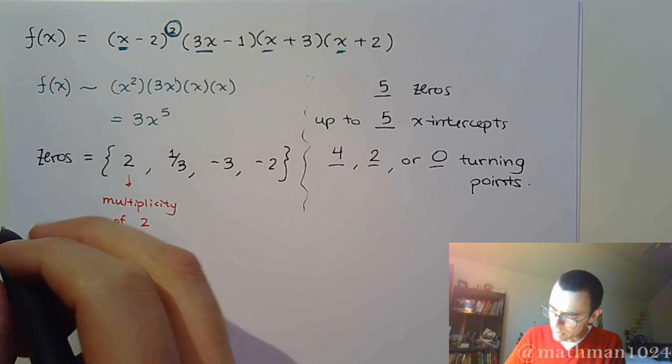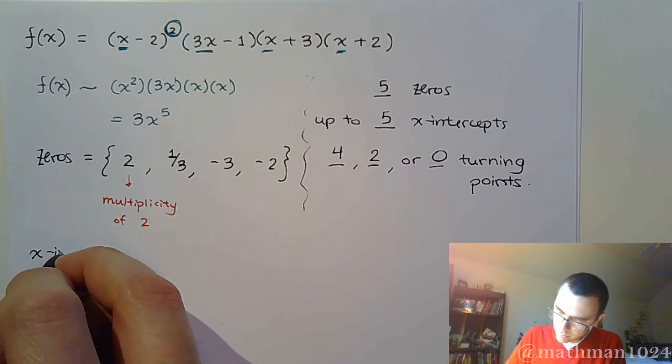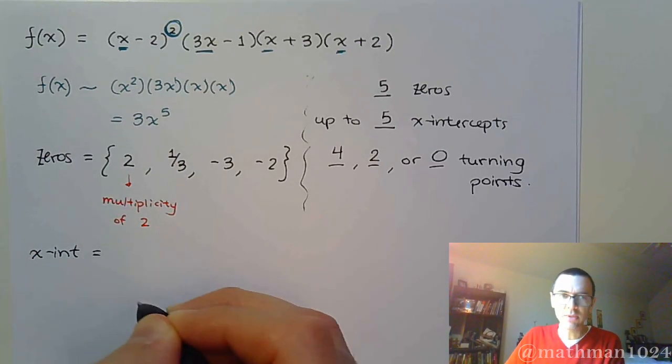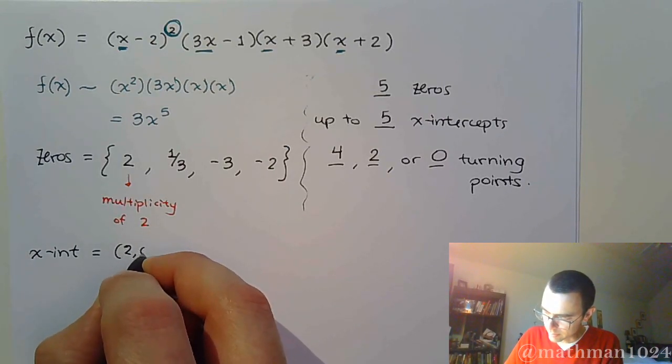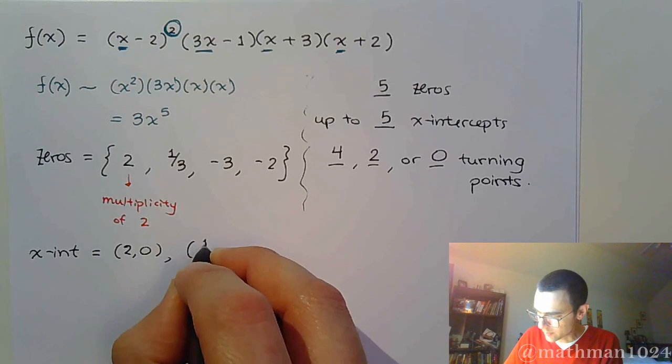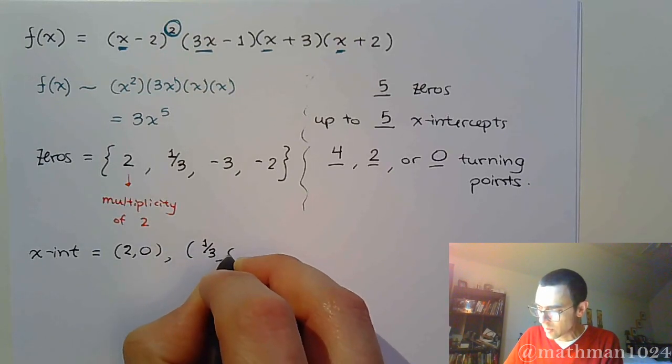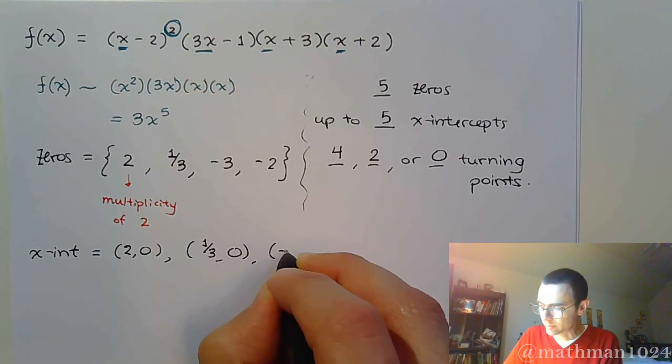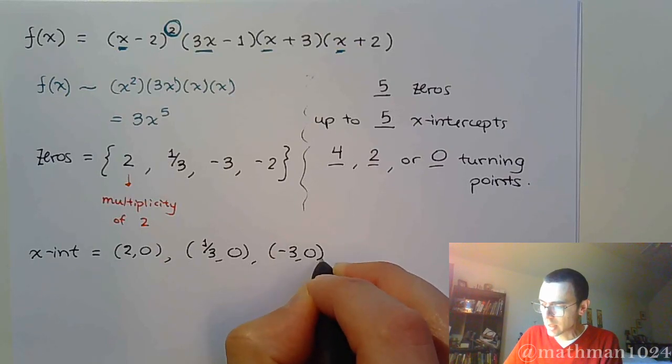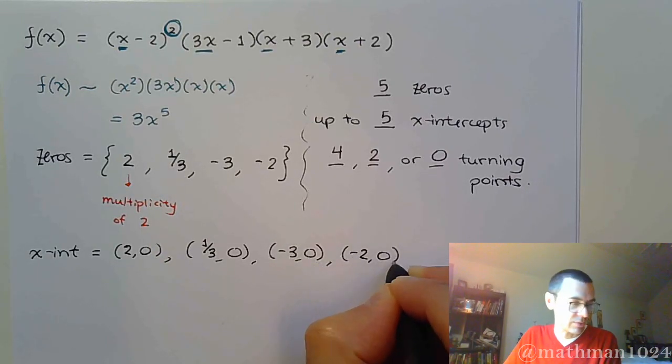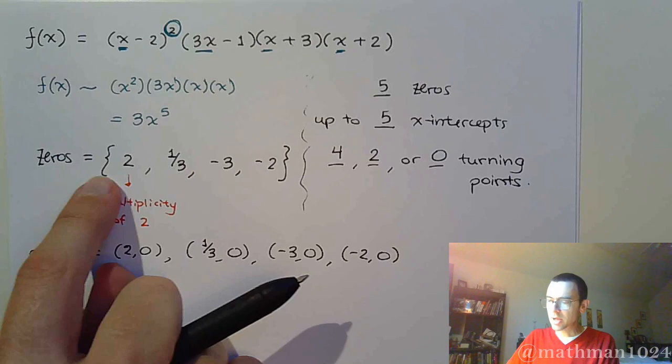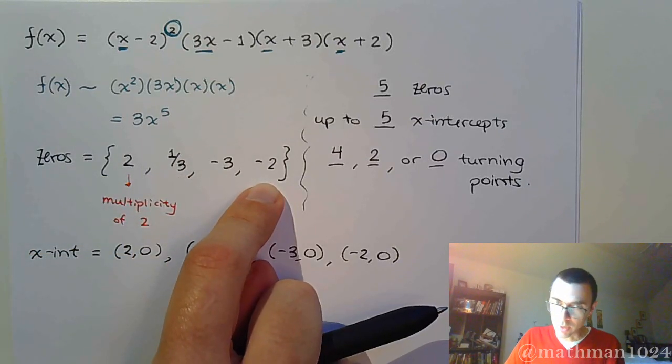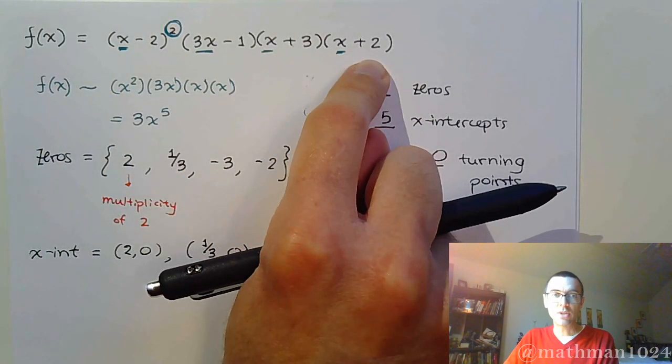So for our x-intercepts, we're going to turn each of these guys that are real into an x-intercept. So we have (2, 0), we have (1/3, 0), (-3, 0), and we have (-2, 0). Now, those are the x-intercepts, and those are pretty easy to pick off because we already have the zeros, and those guys were easier to get because we already had the factorization.